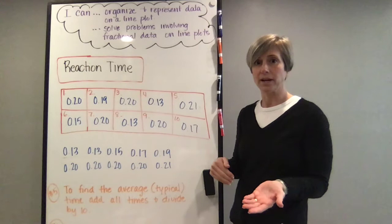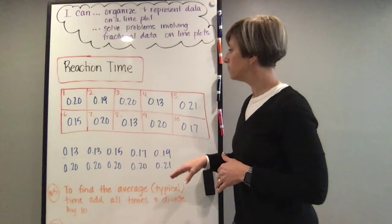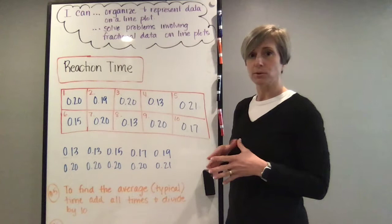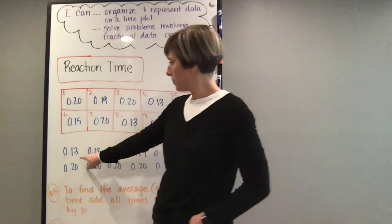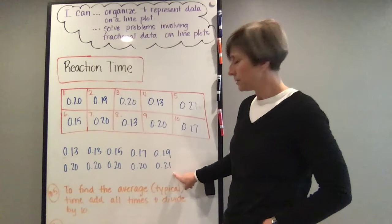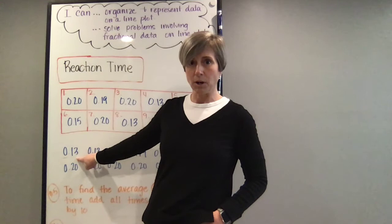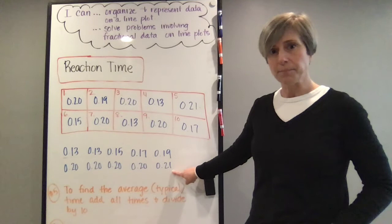So if you look, we have the different reaction times for Gavin. One of your questions on page 230 asks you to list those times in order. So we did that and we listed them from the shortest amount of time it took him to grab it and the longest amount of time. So that kind of seems backwards because this number is a smaller number, it's closer to zero, then this number.